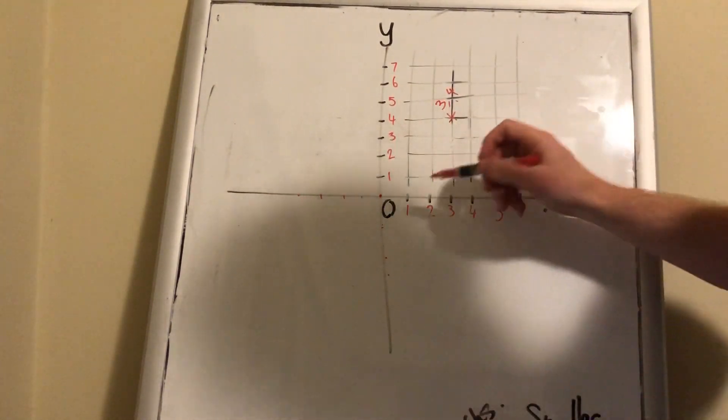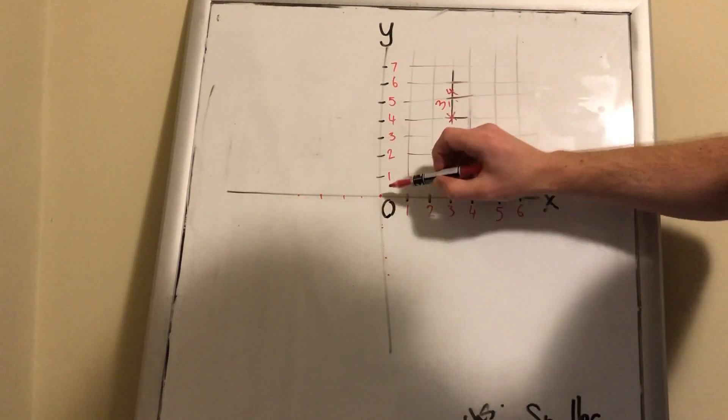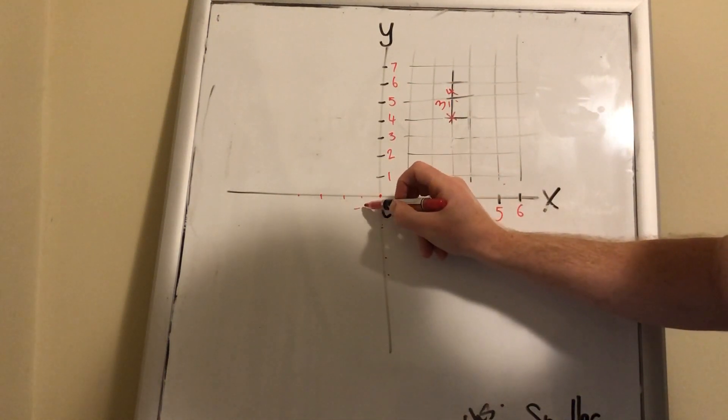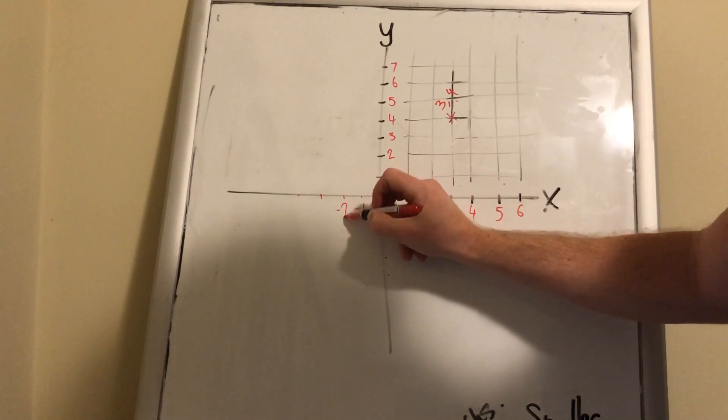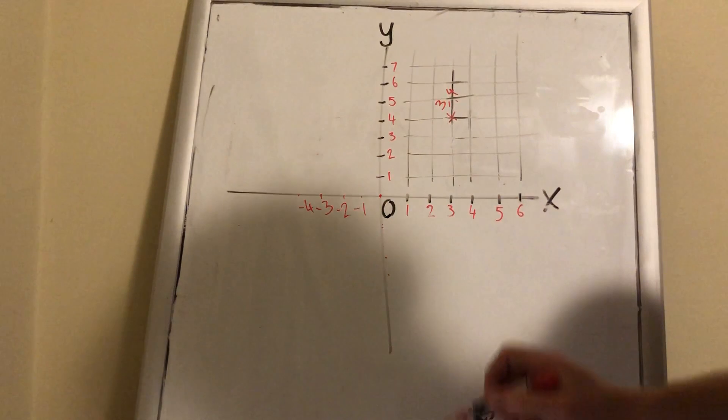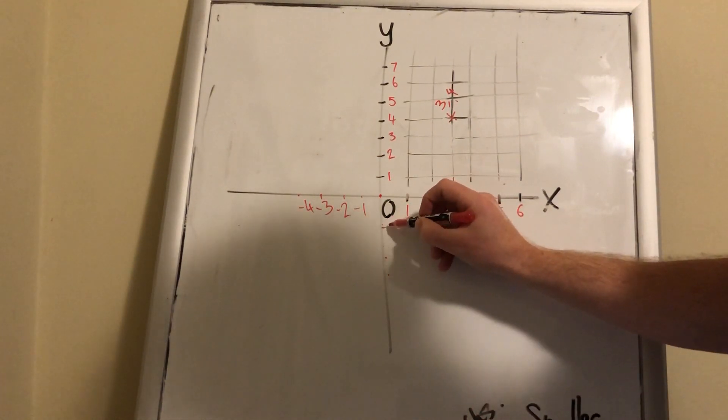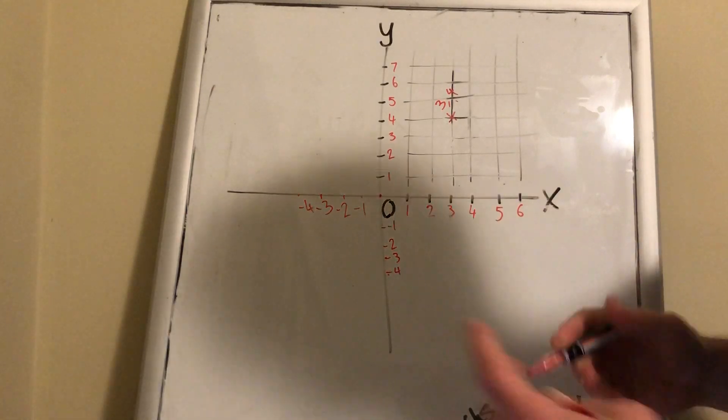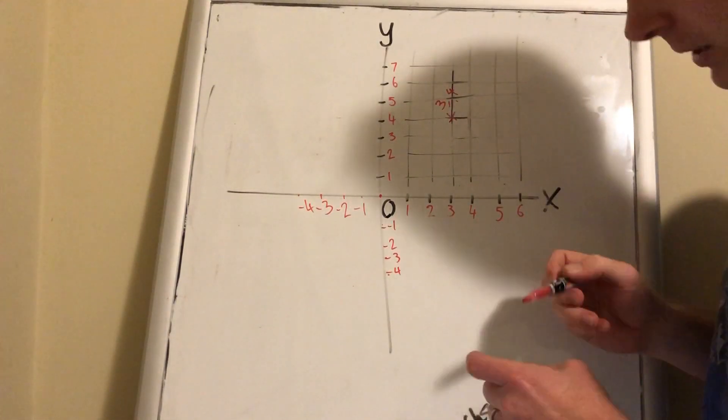With negatives, remember we always work away from zero, which is why the numbers increase going up and this way. Going left: negative 1, negative 2, minus 3, minus 4. Same going down: minus 1, minus 2, minus 3, minus 4. It doesn't matter if you call them negative or minus.